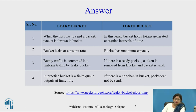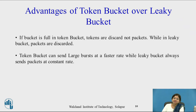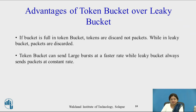In the Leaky Bucket Algorithm in practice, the bucket is a finite queue outputting at a finite rate. But in the Token Bucket, if there are no tokens in the bucket, packets cannot be sent — meaning packets are held by the token mechanism and are not lost at all. If the bucket is full in the Token Bucket, tokens are discarded, not the packets, so data is not lost. While in the Leaky Bucket, packets are discarded. The Token Bucket can send large bursts at a faster rate, while the Leaky Bucket always sends packets at a constant rate.